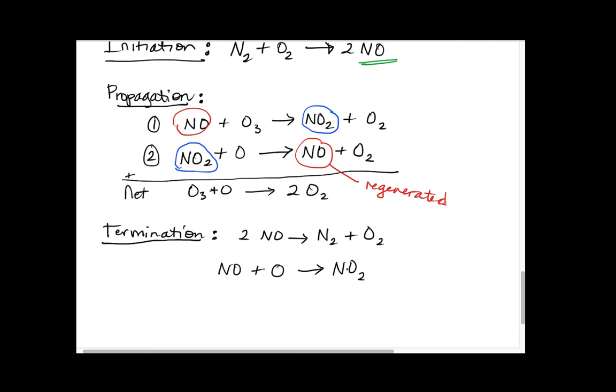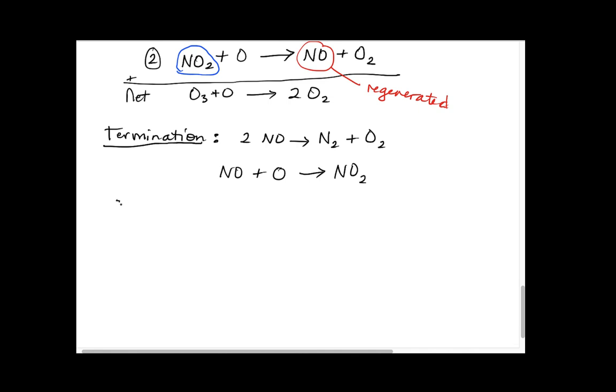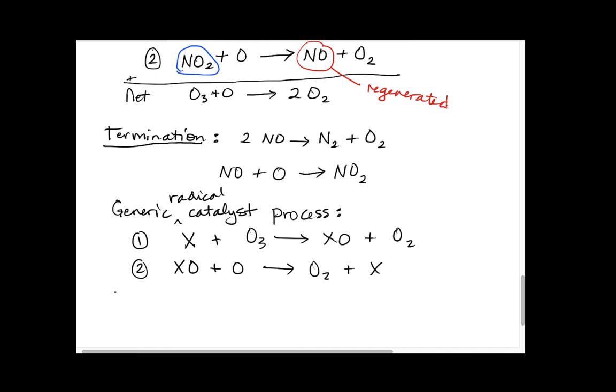When we look at this overall catalyst, we can conclude with a generic radical catalyst process. That generic process is that we have some radical X that reacts with an ozone and picks up one of the oxygens, leaving an oxygen molecule. In the next step, that XO intermediate reacts with another atmospheric oxygen atom to form another oxygen molecule and regenerate that catalyst. This is what worked for the nitric oxide and also the hydroxyl radical, giving us the same net reaction.